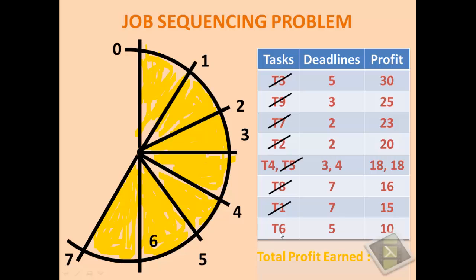Our main objective here is to calculate the total profit earned. We have executed T3, T9, T7, T2, T5, T8 and T1. And their respective profits are mentioned here: 30, 25, 23, 20, 18, 16 and 15. So total profit earned here is 147.